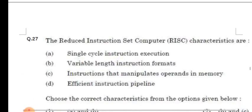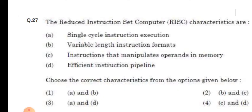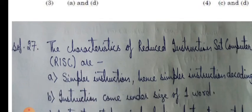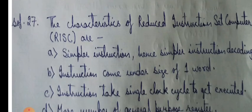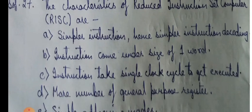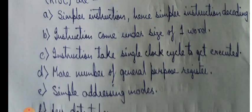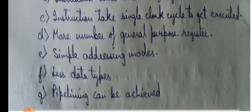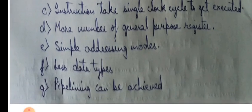Now in our next question, the reduced instruction set computer RISC characteristics are. Now let's see all the characteristics of the reduced instruction set computers. Simple instruction, hence simpler instruction decoding. Construction come under size of one word. Instruction takes single clock cycle to get executed. More number of general purpose registers, simple addressing modes, less data types, pipelining can be achieved. So these are the characteristics of the RISC computers.